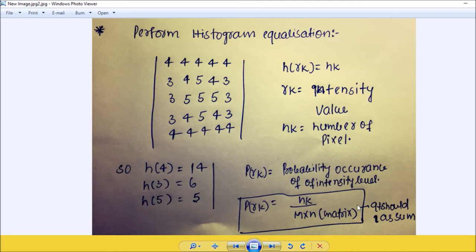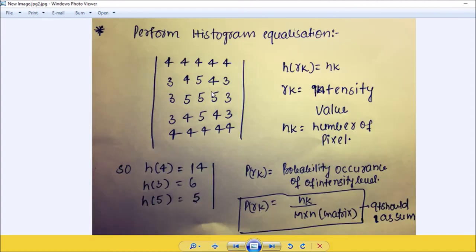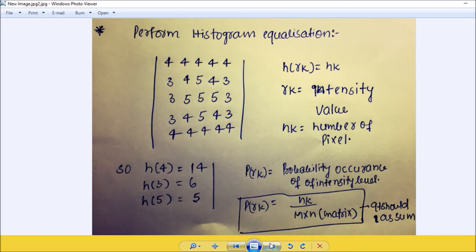Let us go through a table because this is the shortest way we can solve this. Here take the gray level 0, 1, 2, 3, 4, 5, 6, 7, and nk: 0, 0, 0, 6, 14, 5, 0, 0. Now you are thinking how I took this. Because here no value is more than 5, we can take up to 0 to 7 bits. This is the occurrence.